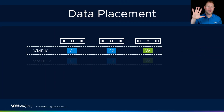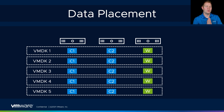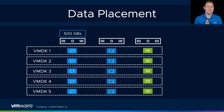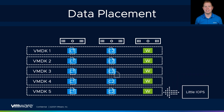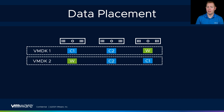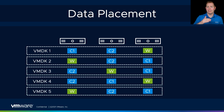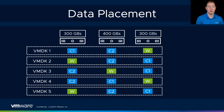Our last topic for this video is data placement — we'll just do a light surface overview here. If we have five 100 GB VMDKs and always place data component 1 on host 1, component 2 on host 2, and witnesses on host 3, we'd have 500 GB on host 1 and host 2, and almost nothing on host 3. All IOPS would go to hosts 1 and 2 — that's not a great utilization of resources. Instead, every time we create a new object — a VMDK, a namespace, or a swap object — vSAN looks at the environment and determines where it can best place that data to maximize resources, primarily from a storage perspective.